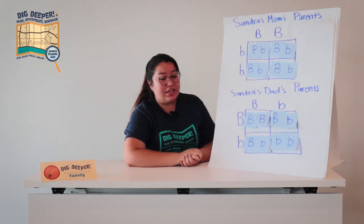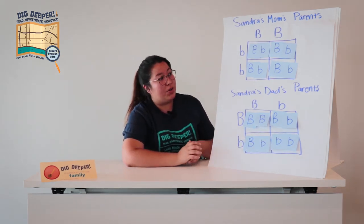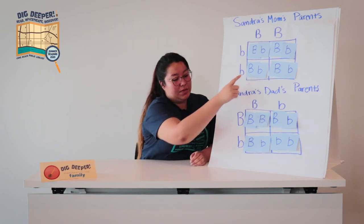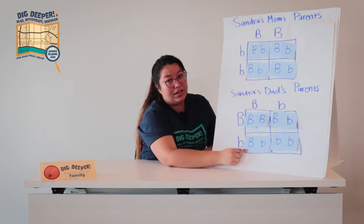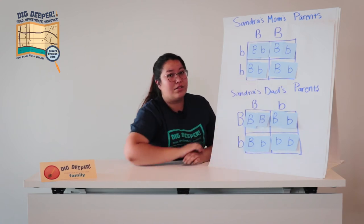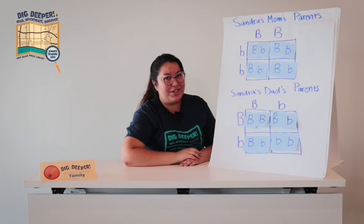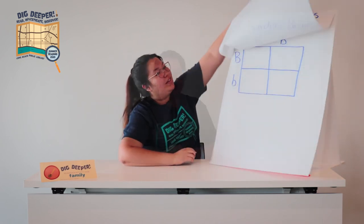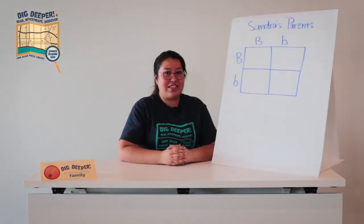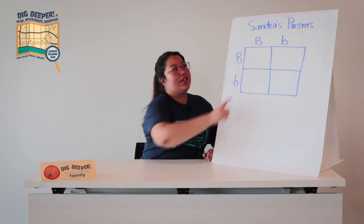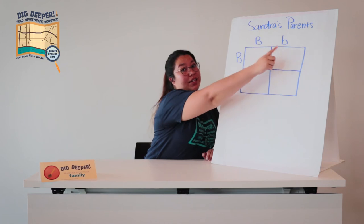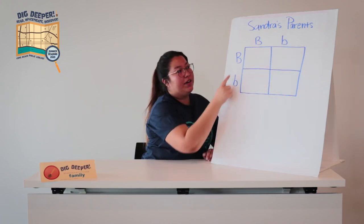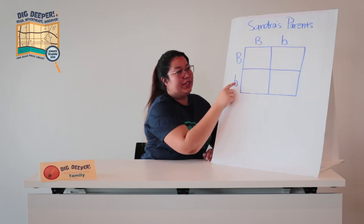So let's say Sandra's parents both ended up with a heterozygous pairing of the brown-eyed alleles. Now, looking at Sandra's parents' heterozygous pairs, let's see how Sandra came up. We'll put her dad on top — big B, little b — and her mom on the side with big B, little b.